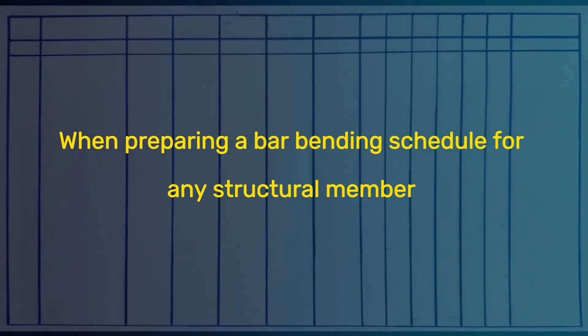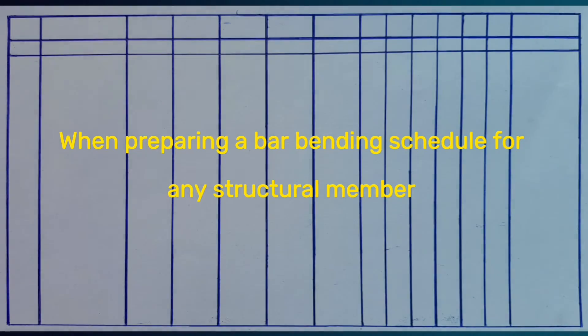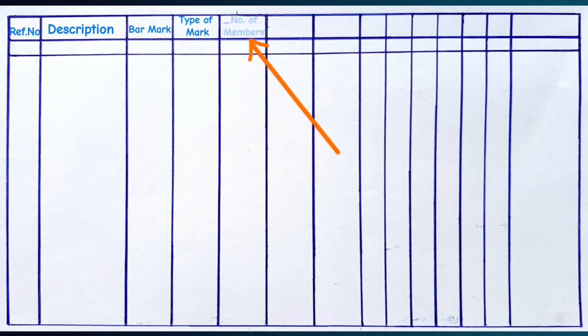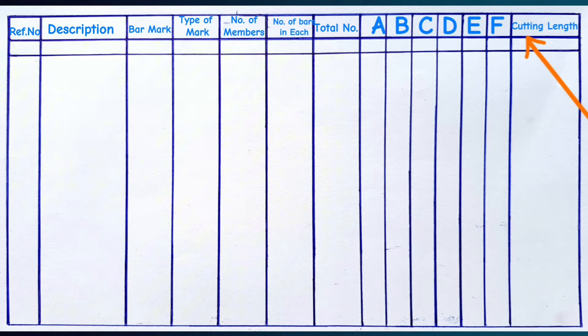When preparing a bar bending schedule for any structural member, the first step is to draw a table having the reference number, the description, the bar mark, the type of mark, number of members, number of bars in each, and the total number of steel bars — with the sides of the steel bar as A, B, C, D, E, and F — and the total cutting length in the final column.